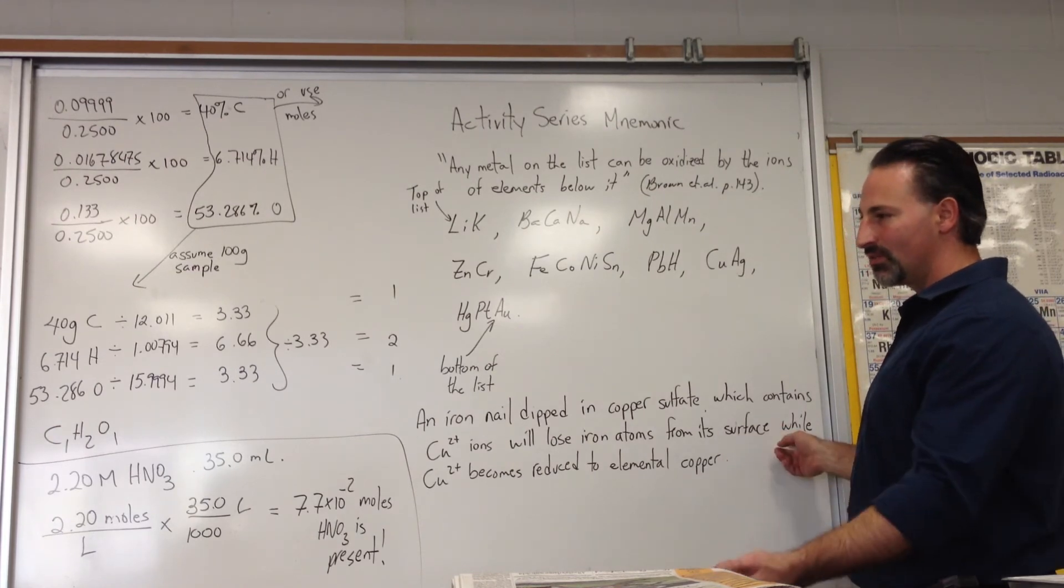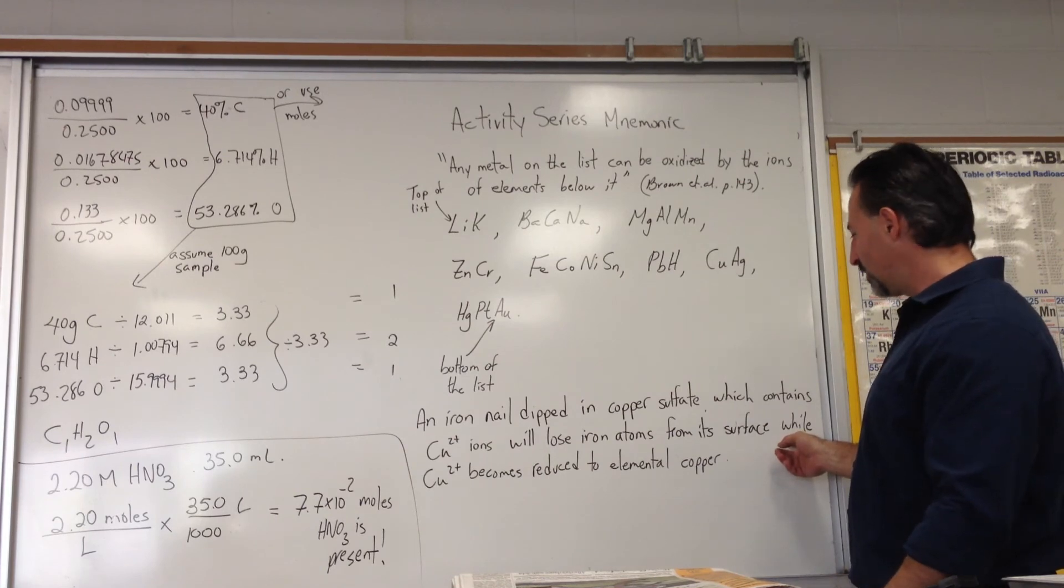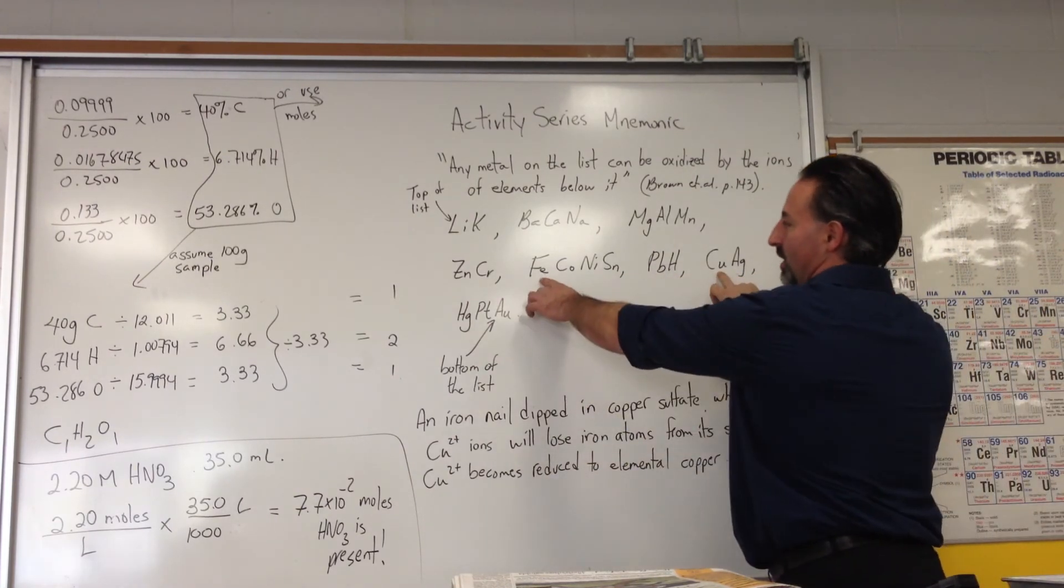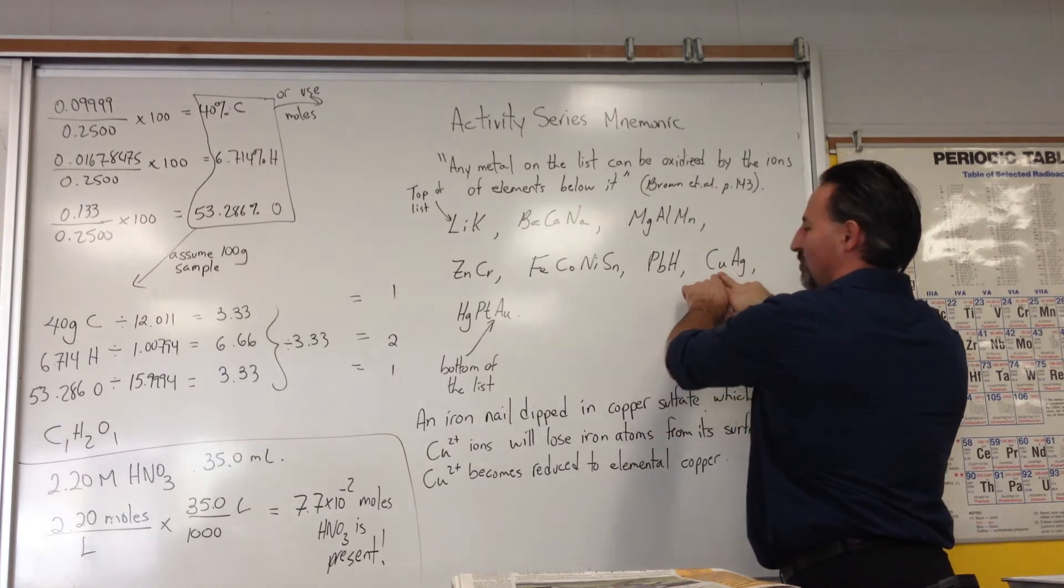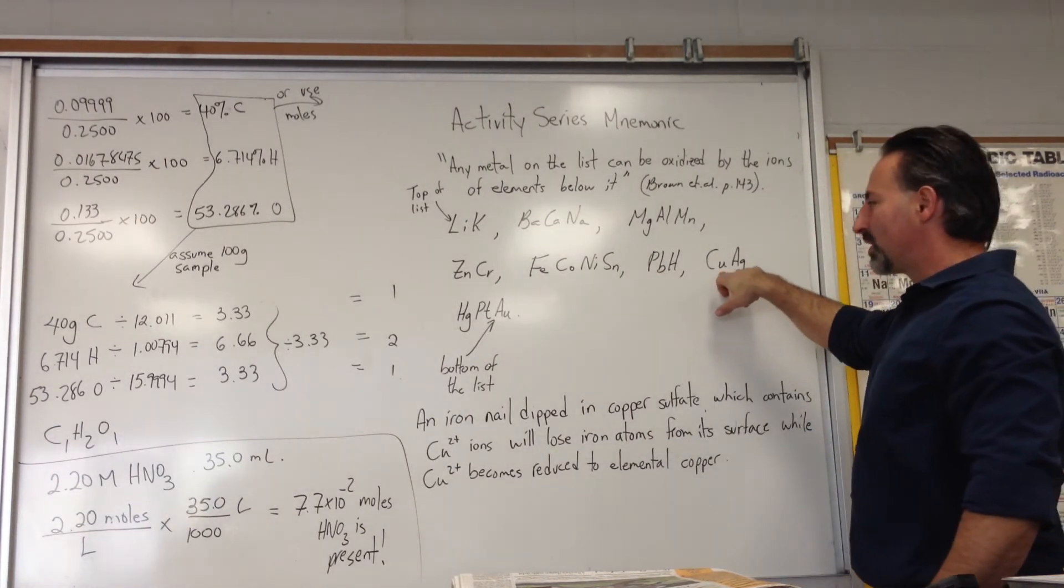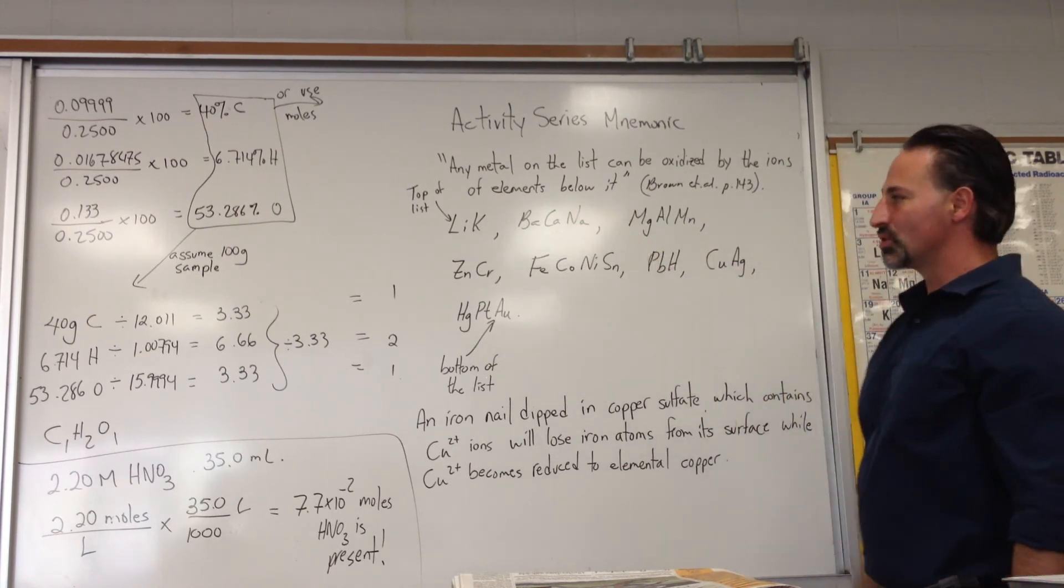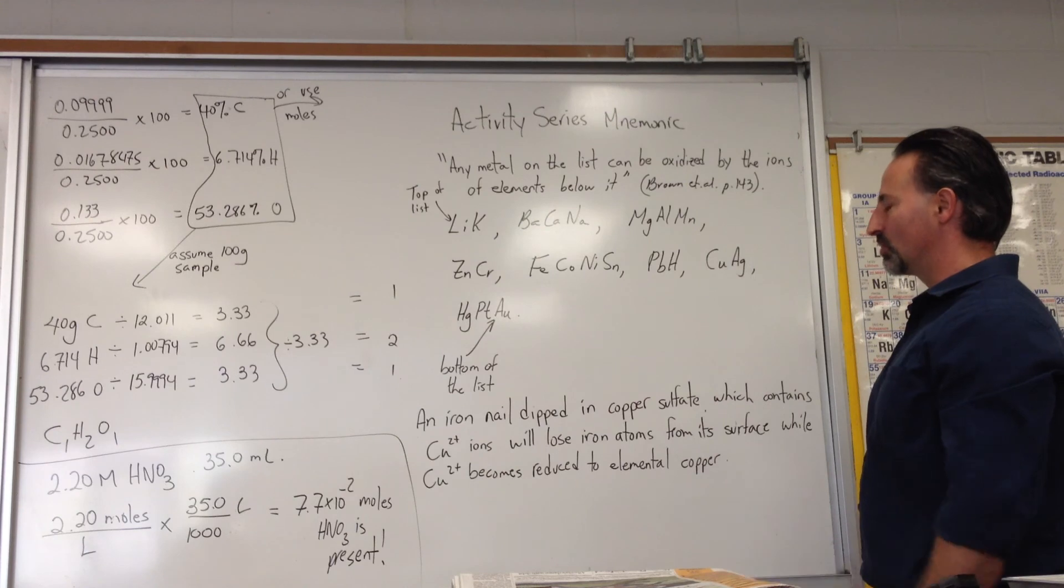The electrons will be given from the iron down to the copper, copper being lower on the list than iron. So the iron will drop its electrons onto copper. The copper will become reduced, so the nail will become coated with copper, and the iron will enter the solution. So the nail will eventually corrode very rapidly in the solution of copper sulfate.